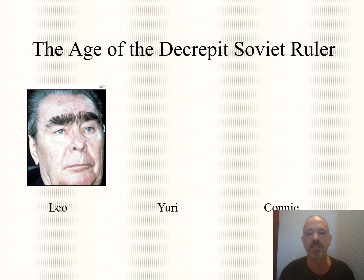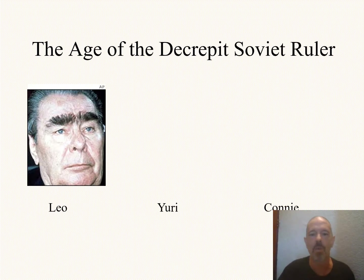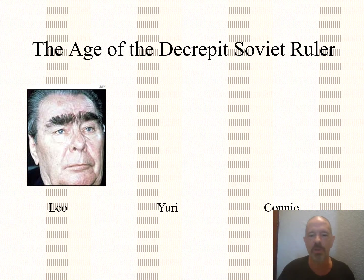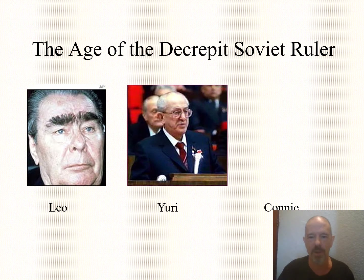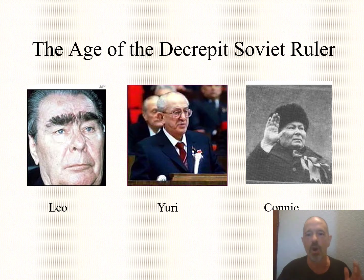We call this the age of the decrepit Soviet ruler. That's Leonid Brezhnev and his wonderful eyebrows — I've never seen anything like this. He dies — something like that, I don't recall the exact year — so they replace him with Yuri Andropov, who was in his late 70s, and he survived a couple of months and died. So Konstantin Chernenko also takes over, who looks like an older Russian woman in that photograph, also in his late 70s, and he dies within a couple of months.